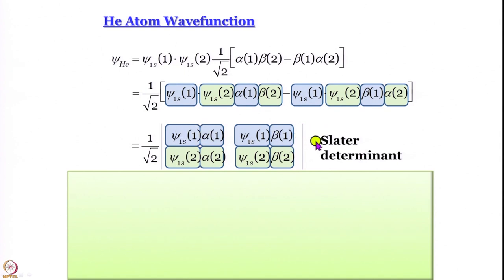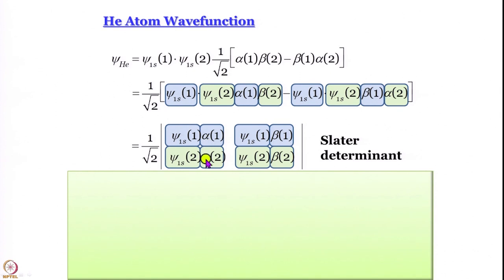Let us have a look at the Slater determinant. Look at the first row - what is constant and what is varying? The electron number is constant: psi_1s_1_alpha_1, psi_1s_1_beta_1. What has remained the same is the electron number, and what has changed - even psi_1s is the same - what has changed is from alpha we have gone to beta. So if you look at the whole thing, what has really changed is your spin orbital.